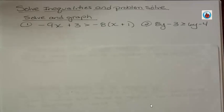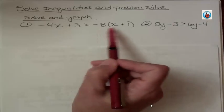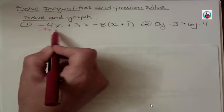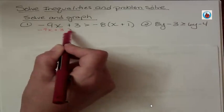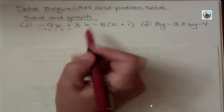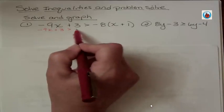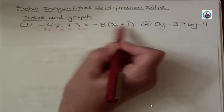In the first one, you want to get rid of the parentheses by distributing. I'm not doing anything to the left side just yet. I'm gonna write this a little smaller to fit it into the space. Negative 8 times x, negative 8 times 1.